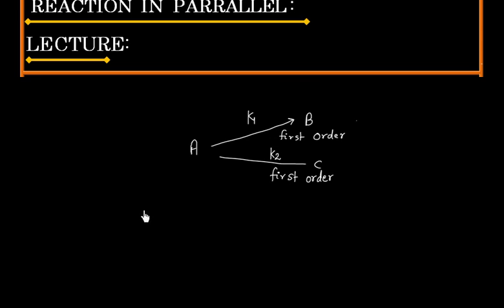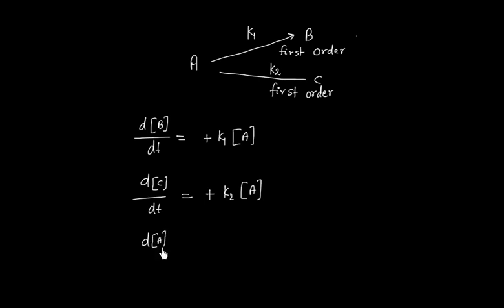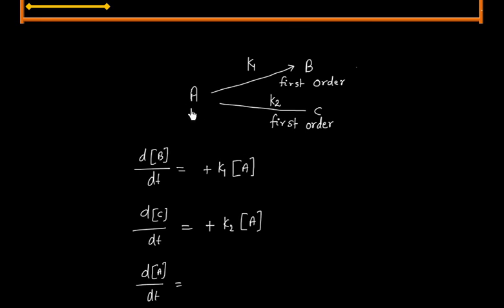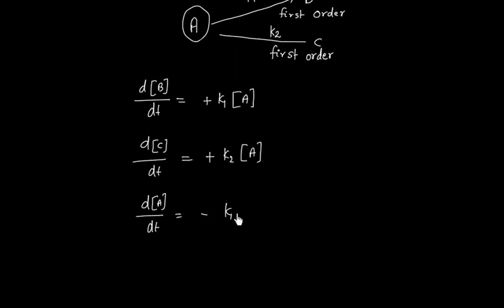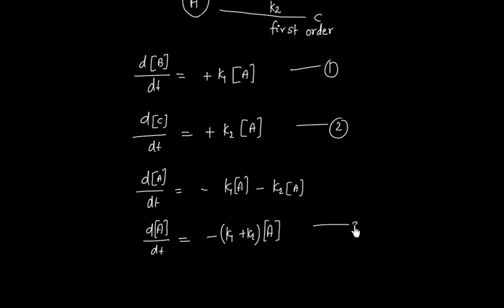We can write equations for the production of B, for the production of C, and for the decomposition of A. There are two paths by which A can be decomposed: one path gives K1 times A, and the other gives K2 times A. So we have three equations, and we can solve for the concentration of A, B, and C at any time T.